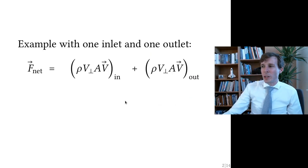This is the general equation, and we're looking now at a simplified version of that equation when there's only one inlet and one outlet. In that case, you have here ρVA times the velocity vector incoming and ρVA times the velocity vector outgoing.